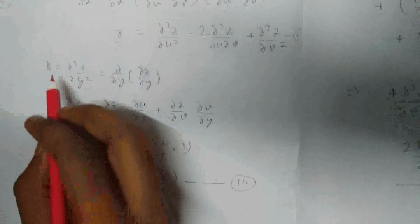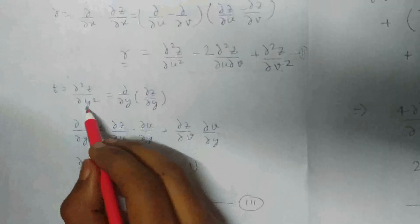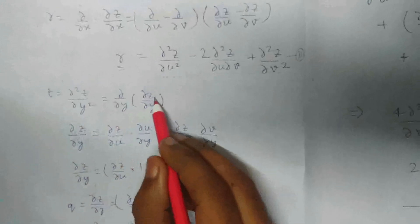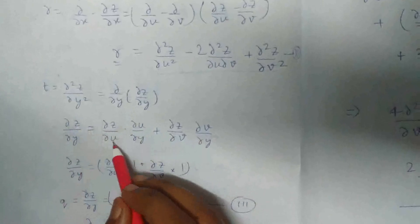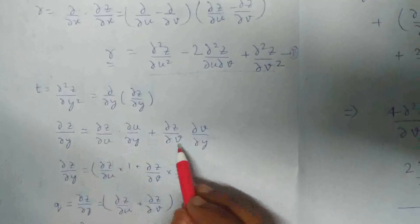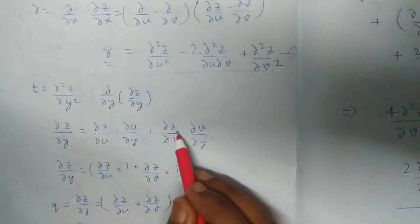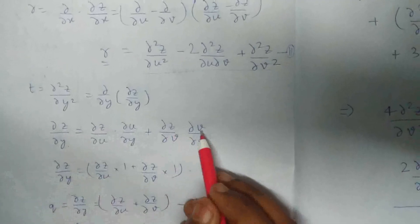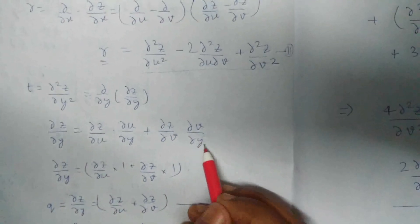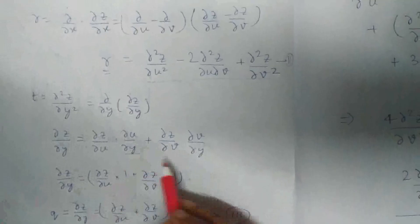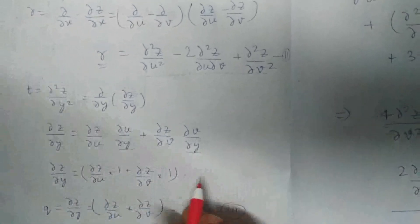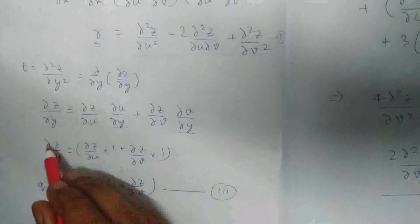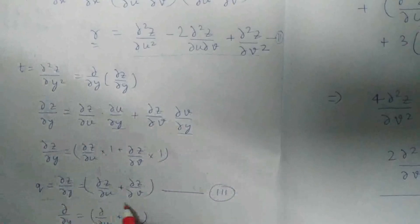Similarly we can find t. Here t is d²z/dy², which is d/dy multiplied by dz/dy. Again, dz/dy is dz/du multiplied by du/dy, adding to it dz/dv multiplied by dv/dy. We've calculated these two values earlier as we're using the transformations of u and v. So we get 1 and 1, and this way we find the value of q.